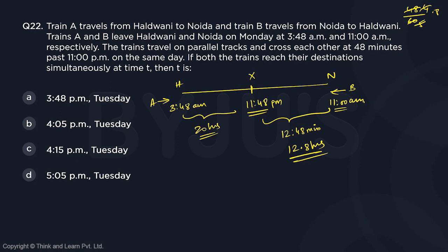Now, after the meeting point, since both trains reach their destinations simultaneously, they must each take the same remaining time A. Let the post-meeting travel time be A minutes. Speed of A divided by speed of B equals time taken by B divided by time taken by A.